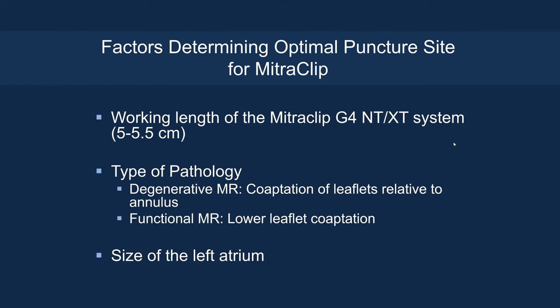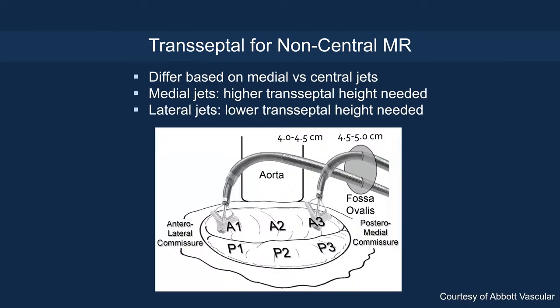The factors determining the optimal puncture for MitraClip include the working length of the MitraClip G4 system, the type of pathology involved — such as degenerative MR, where the coaptation leaflet is relative to the annulus — or functional MR, where you have a lower leaflet coaptation plane, and the size of the left atrium. In the case of non-central MR, it depends whether it's a medial, lateral, or central jet.